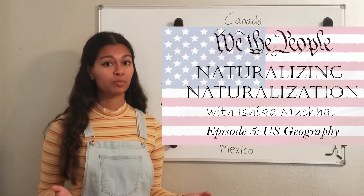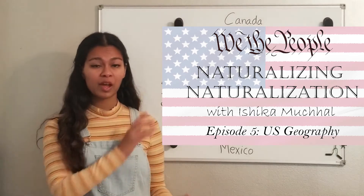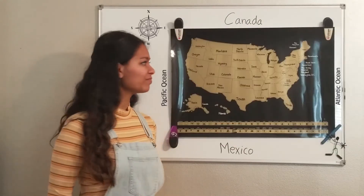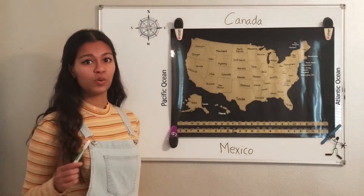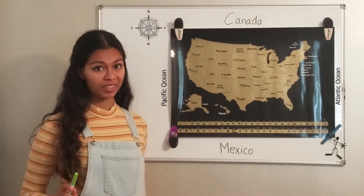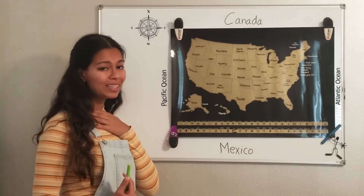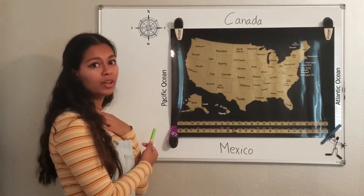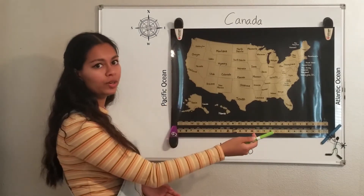If you need to see the previous videos, just click the card above and let's get started. For the U.S. geography portion of the test: the ocean to the west of the United States is the Pacific Ocean, and the ocean to the east of the United States is the Atlantic Ocean.